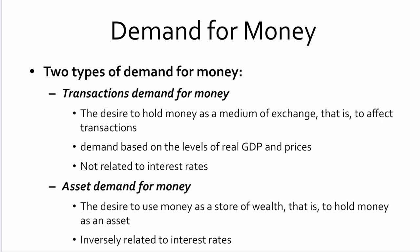There are really two types of demand for money. The first is the transactions demand for money — it is the money required in order to buy and sell things. People hold money, people spend money, and people make money. That's really what the transactions demand is — it deals with that flow. It is not related to interest rates; rather, demand is based on the level of real GDP and prices.